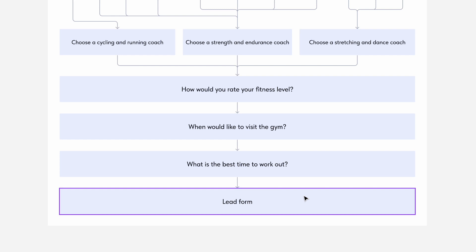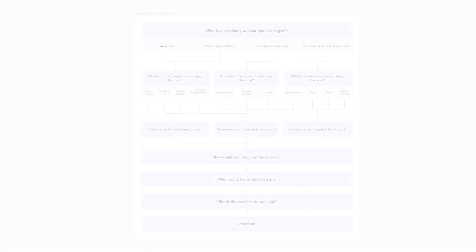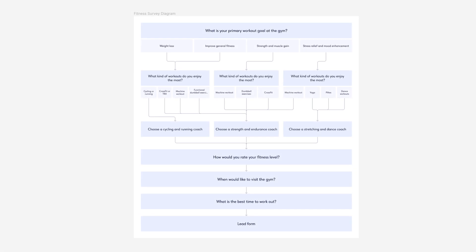That's what our plan is for today. If you're creating quizzes with branching, I advise you to draw a similar diagram and add the text straight away. The diagram will allow you to visually see the entire communication with the person and avoid logical confusion.